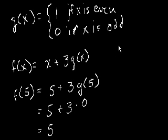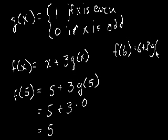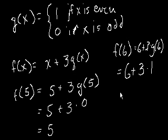Well, what would be f of 6? f of 6 would equal 6 plus 3 times g of 6, right? And once again, that equals 6 plus, well, this time g of 6 is even, so 1. So this equals 6 plus 3 times 1, which equals 9.